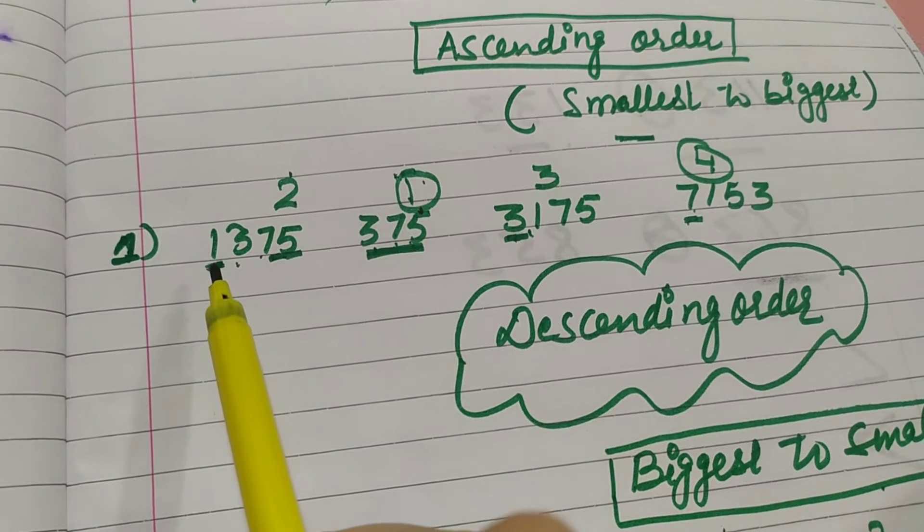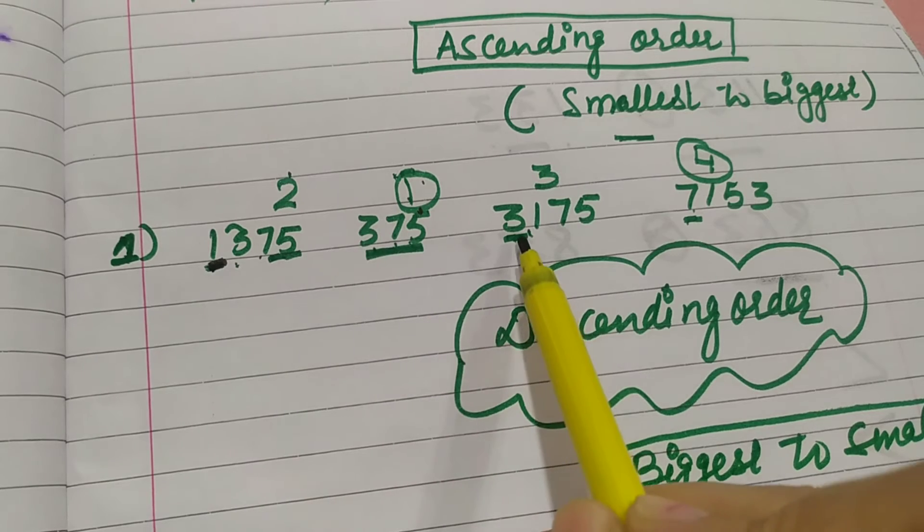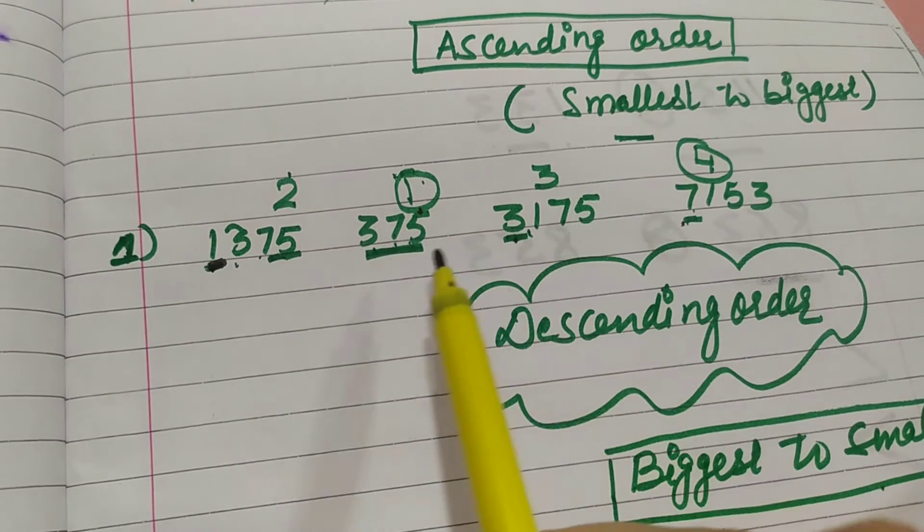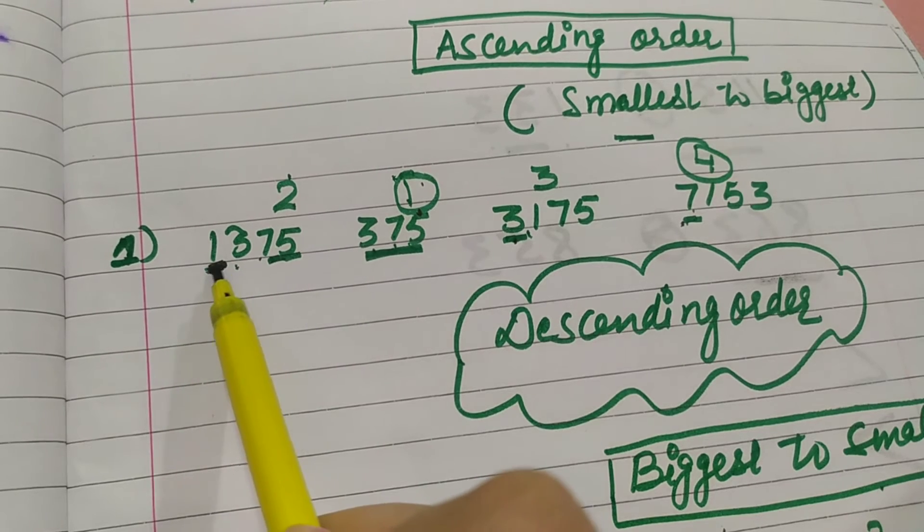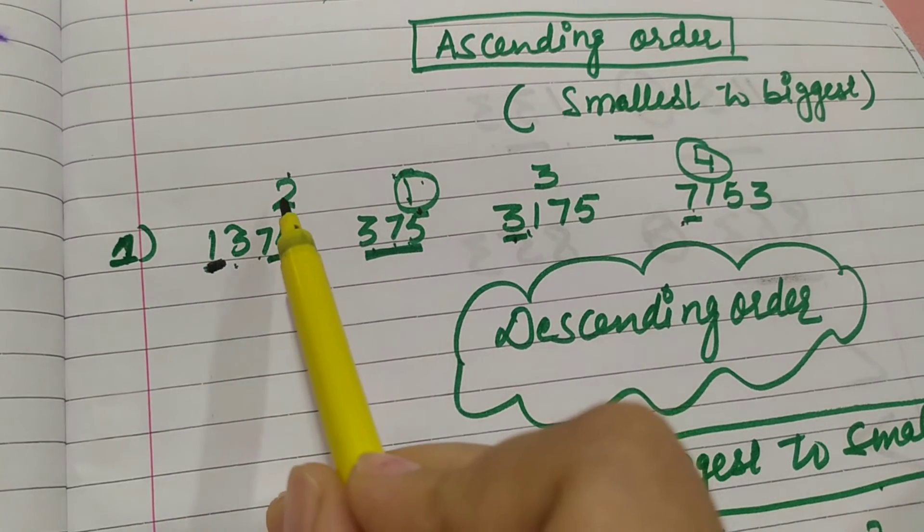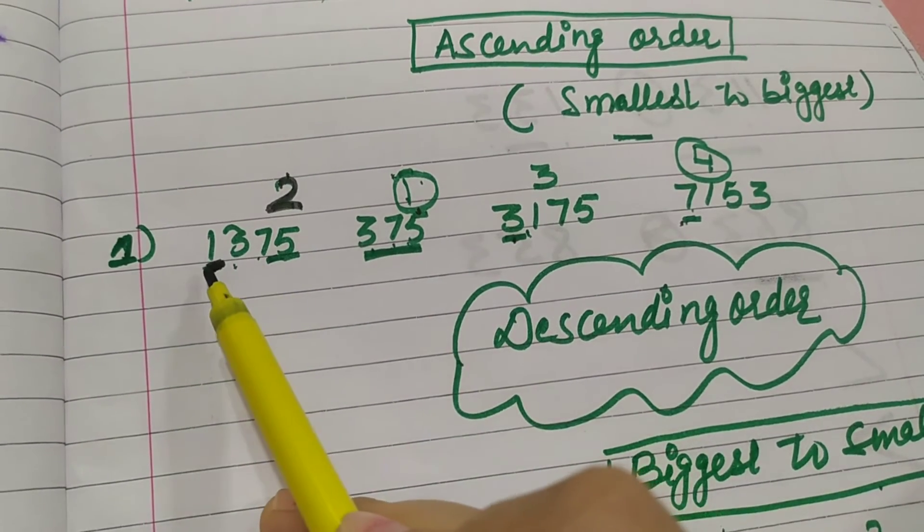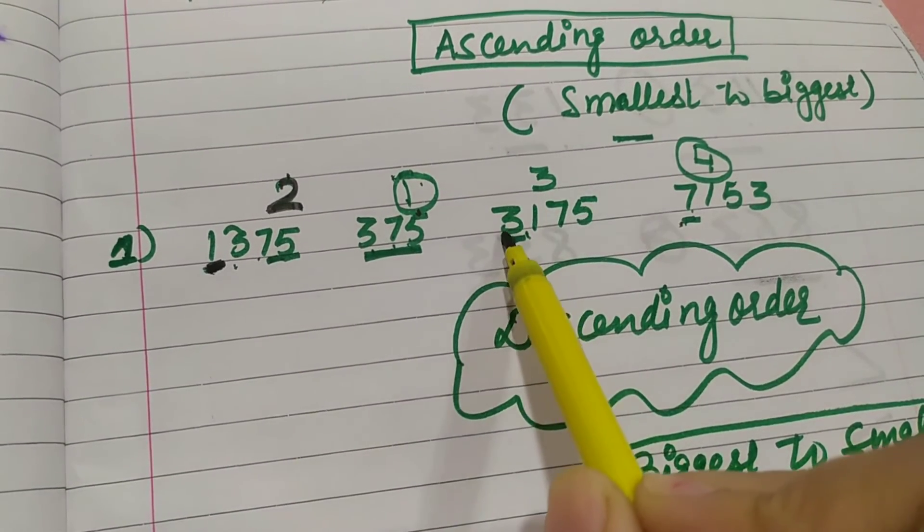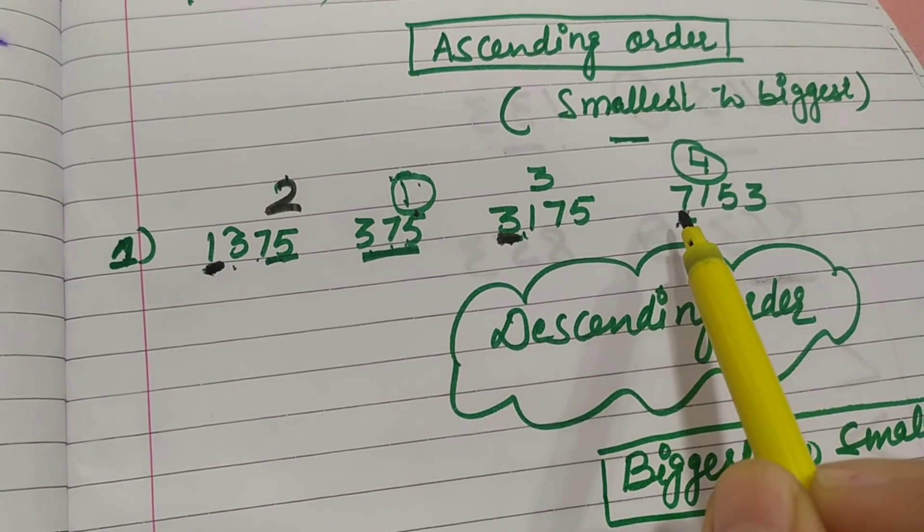Then we will check the first digit of each number. This is 1, 3, 7. After this 1, then this will come in second position. Then after 1 this number will come in third position. And the biggest number is 7153. This number will come in fourth position.